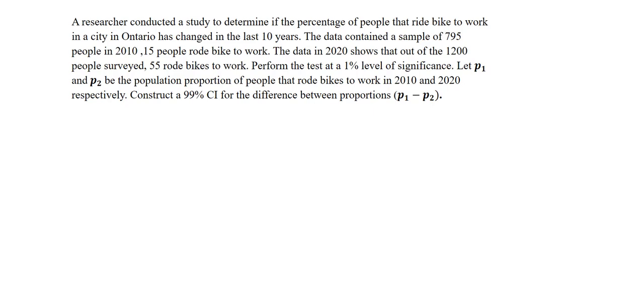Construct a 99% confidence interval for the difference between proportions, P1 minus P2. We will look at the claim in this question. The claim is that the percentage of people that ride bikes to work in Ontario has changed. So as a result of that, my claim is the alternative. If P1 is not equal to P2 or P1 minus P2 is not equal to 0. The null will be P1 is equal to P2 or P1 minus P2 is equal to 0.